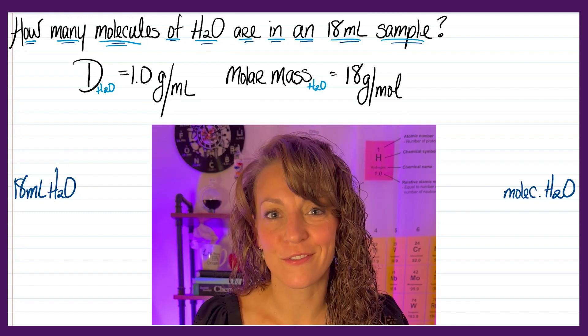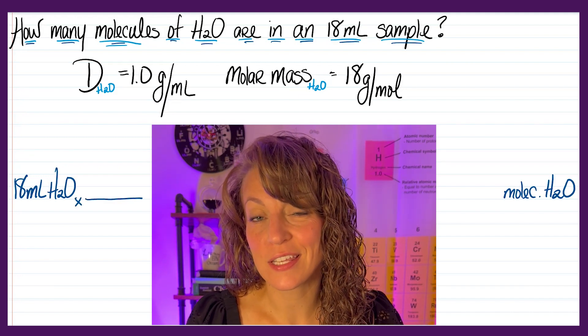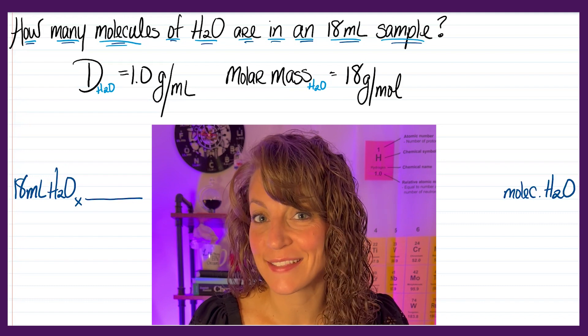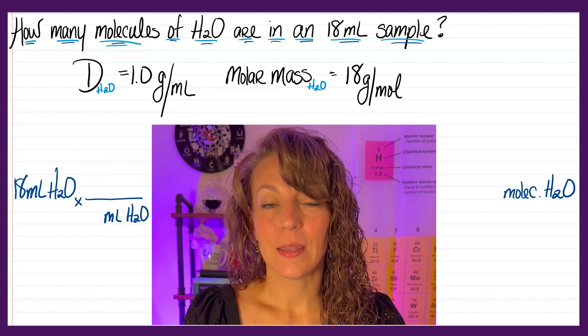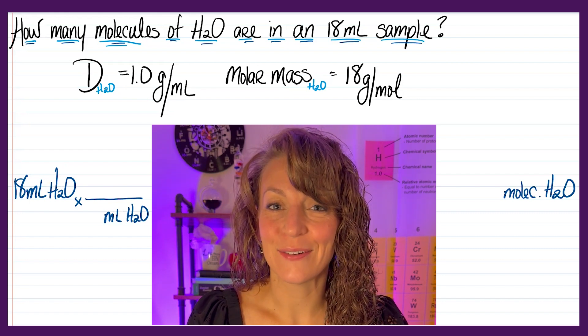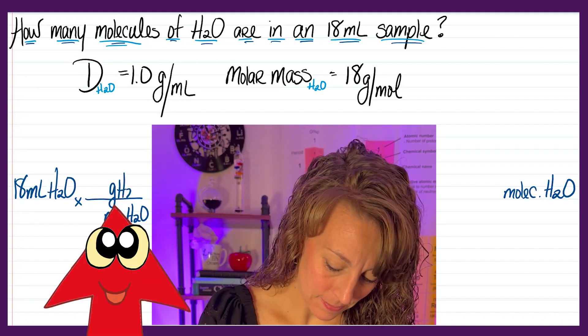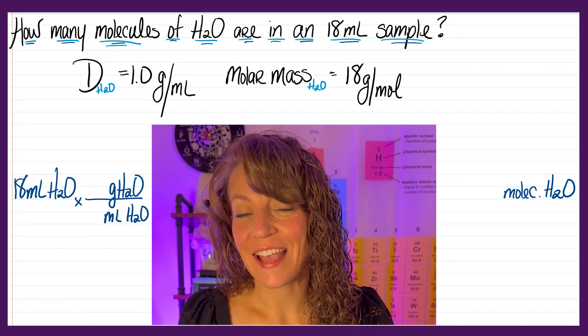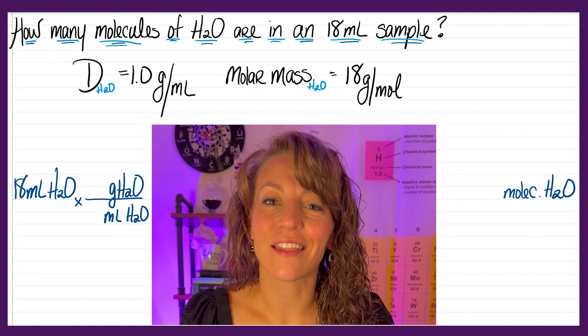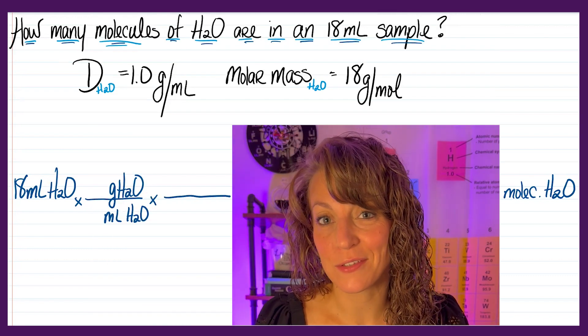So I'm going to set up my first ratio. I'm going to put milliliters of water to the bottom of that first ratio to cancel. Now since the density is grams per milliliter, I can go from milliliters on the bottom to grams of H2O up top. That's still not the unit I need, however, so I need another ratio. And I'm going to bring down grams of H2O to cancel.